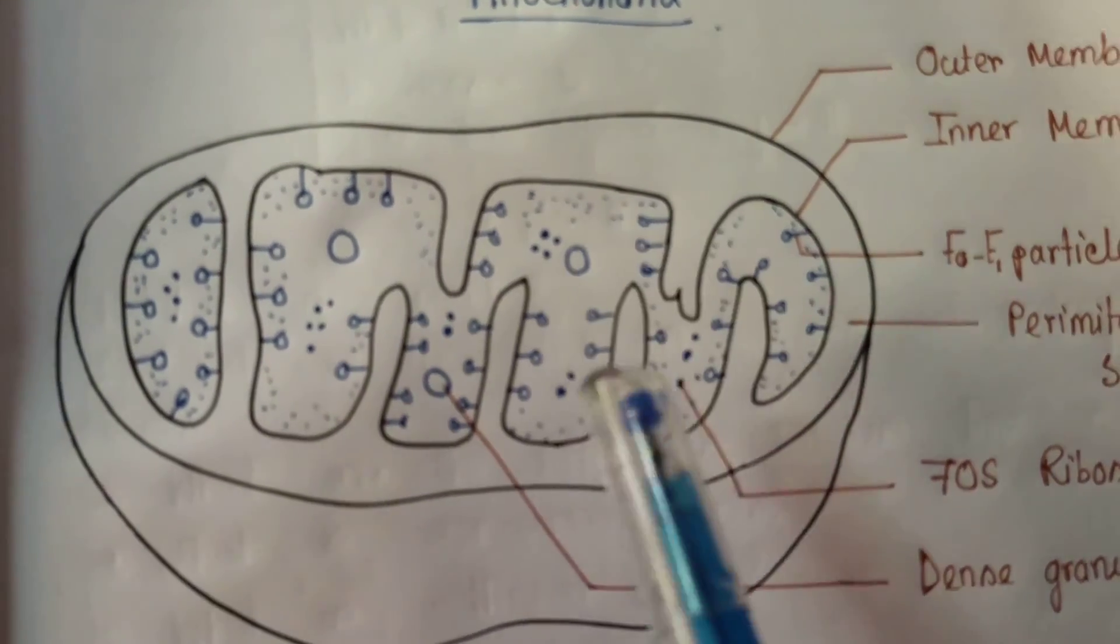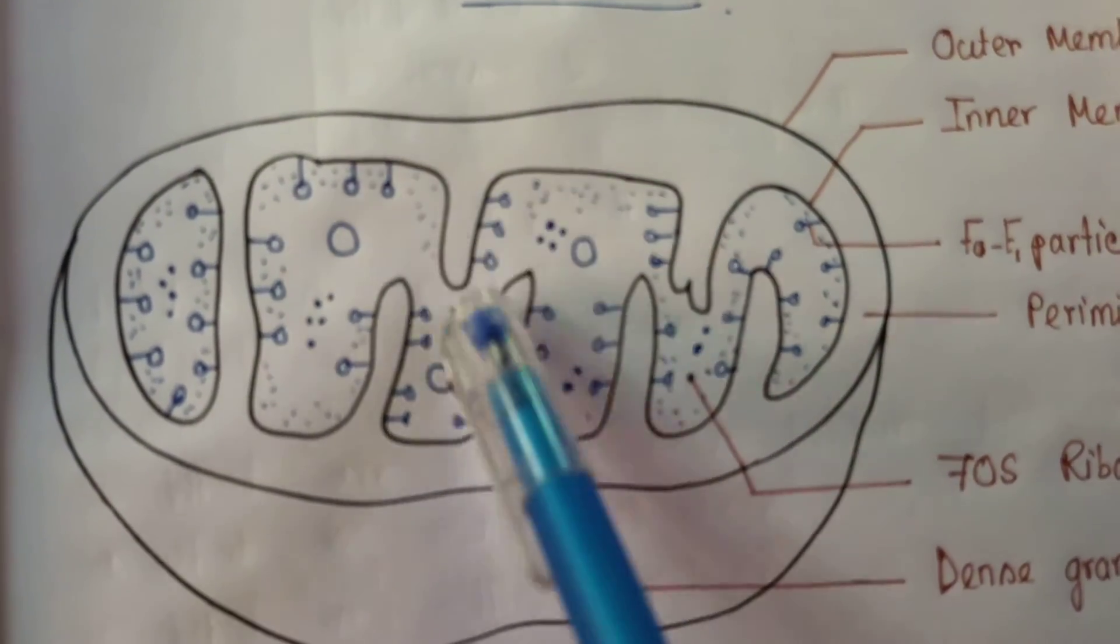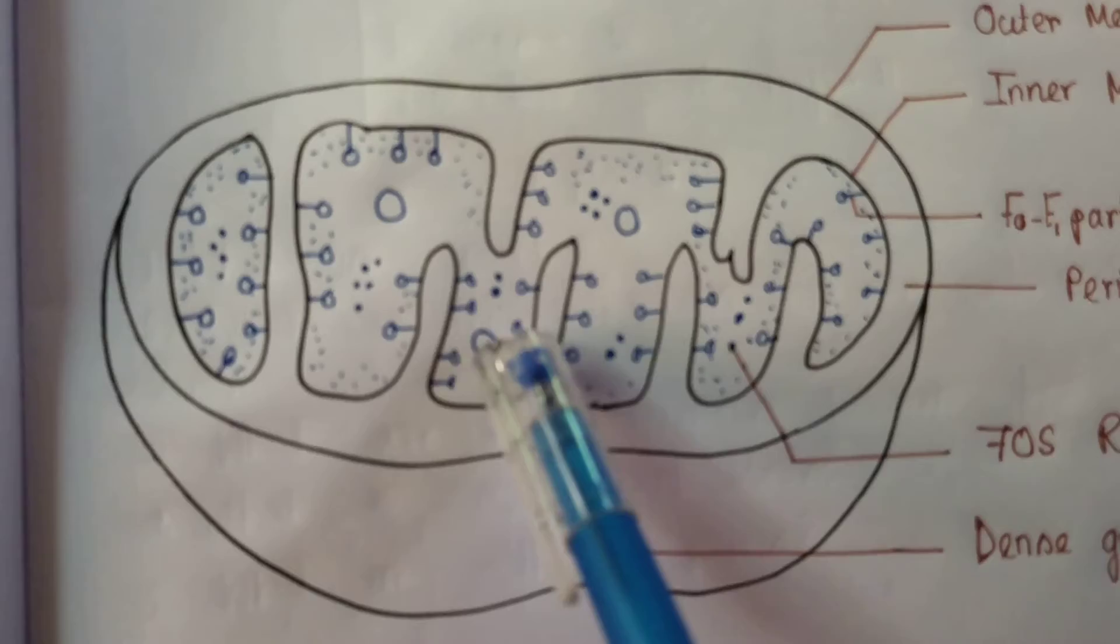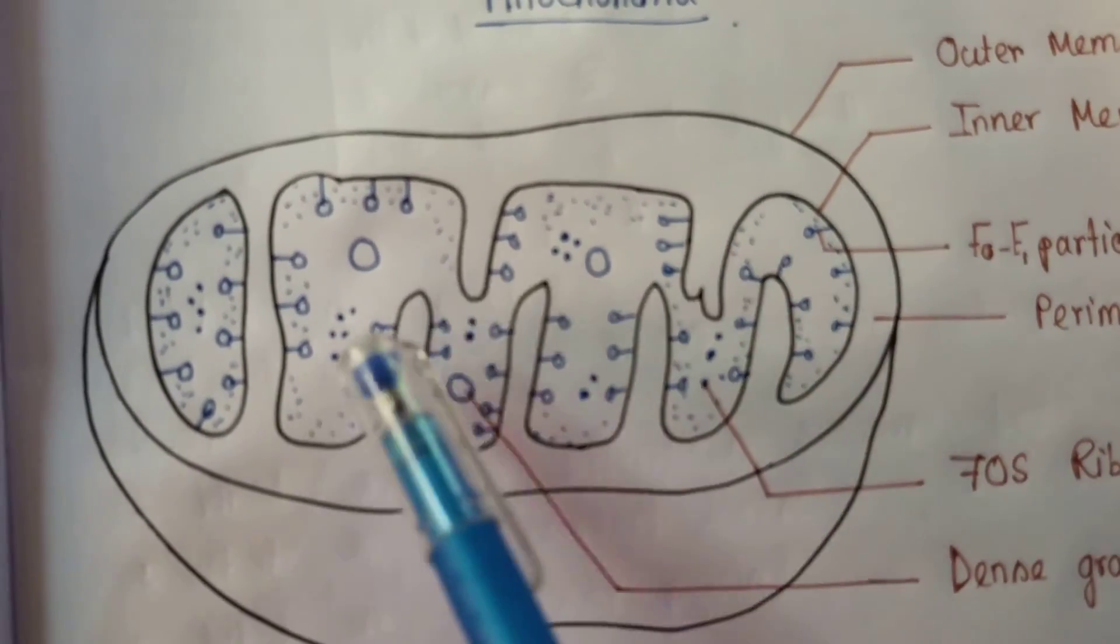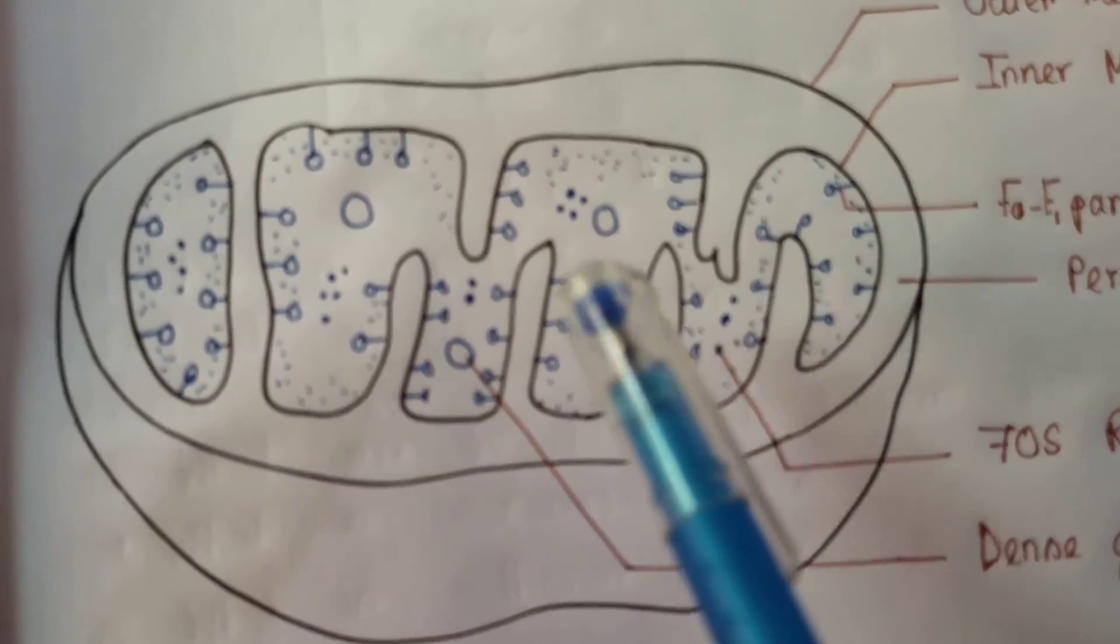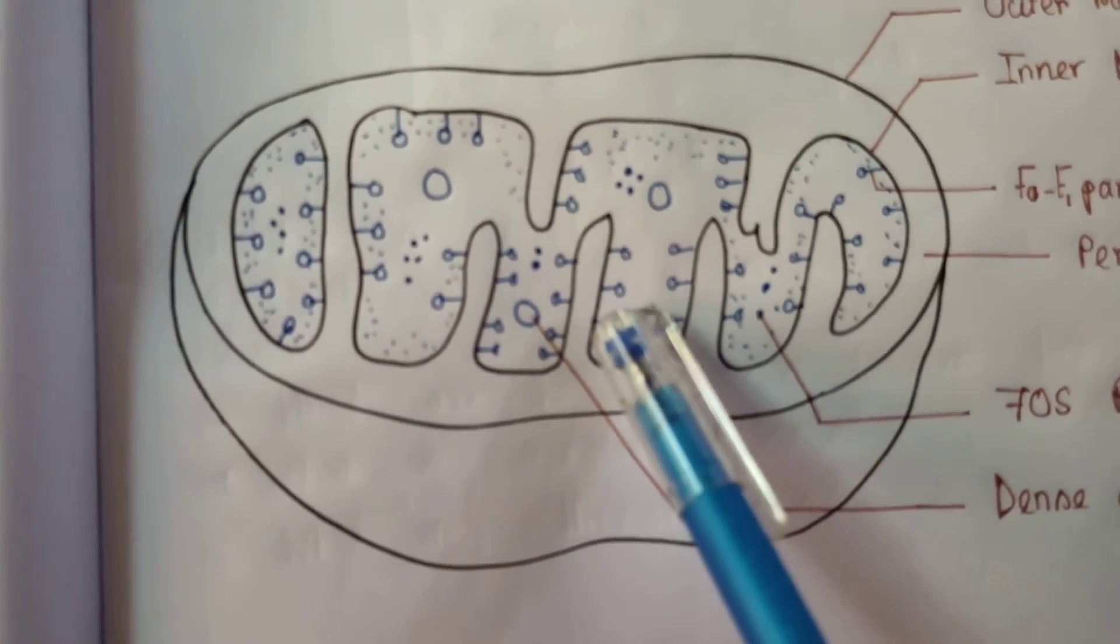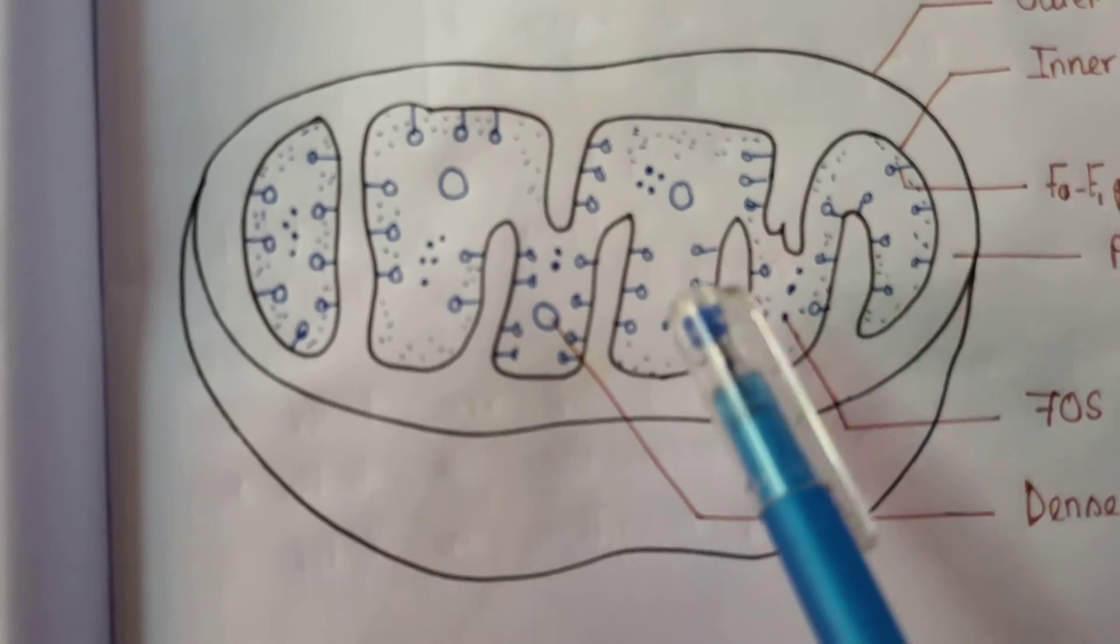Within this inner membrane, the inner membrane folds inward and makes finger-like projections. These are called cristae. The inner membrane of the mitochondria is filled with homogeneous substances named the matrix.